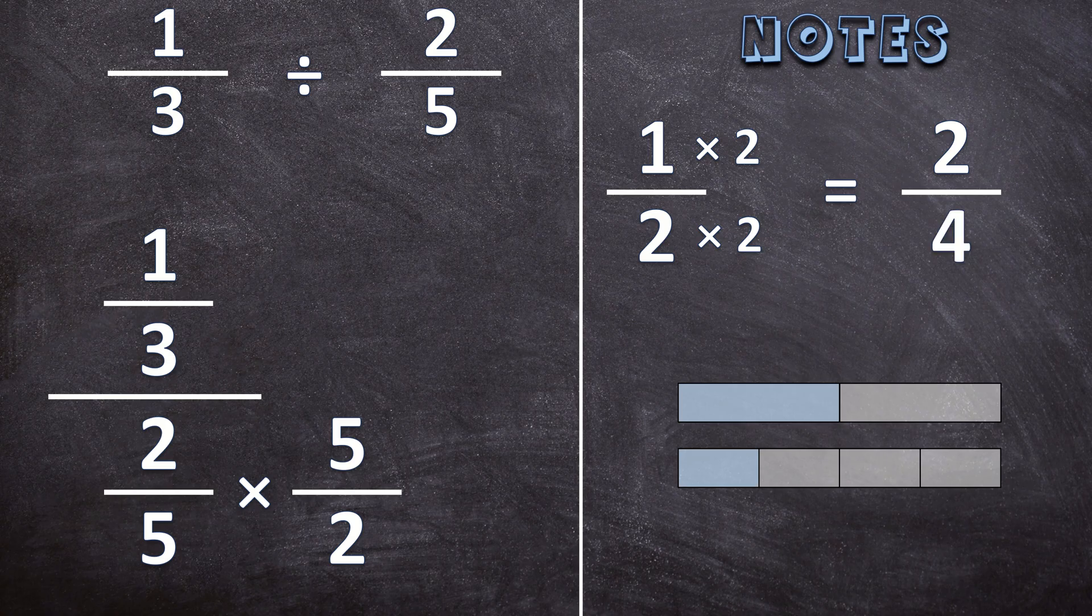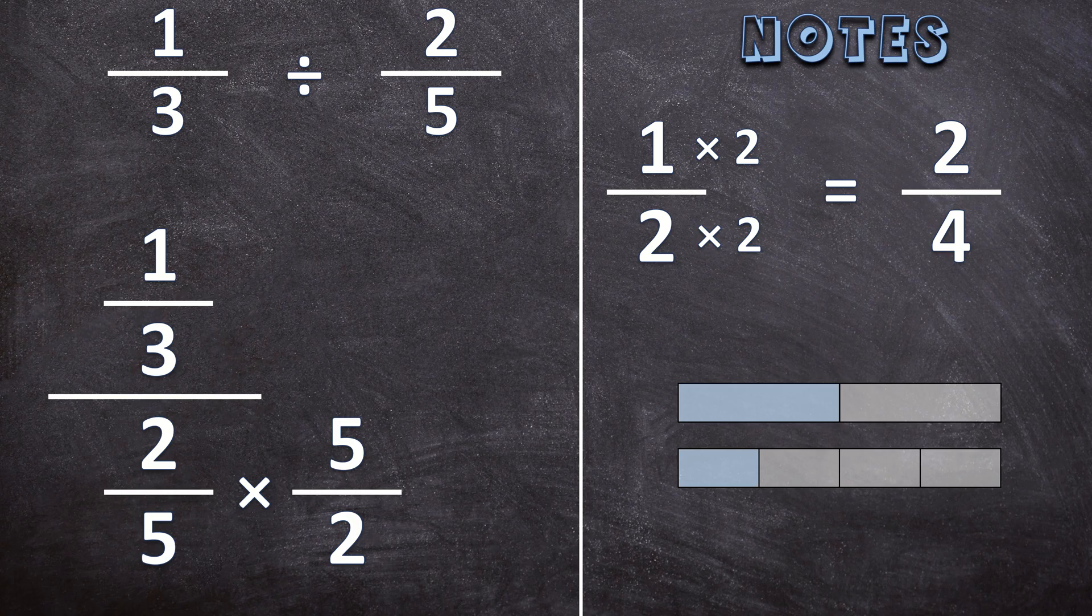Now let's have a look if these two have the same value. The first one is still the same. I divided the rectangle into two pieces, I colored in one of those pieces. But the second fraction has changed. We have the same rectangle. We divide it into four pieces but we color in two of those pieces.